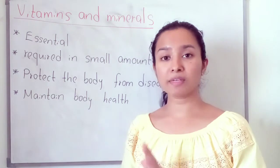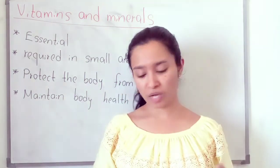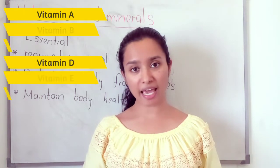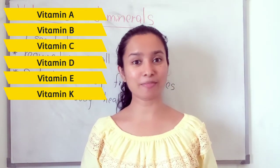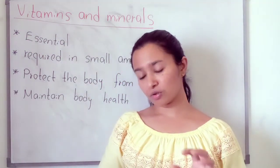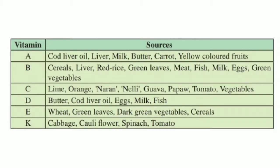There are different kinds of vitamins, but you need to know six types: Vitamin A, B, C, D, E and K. Sources of Vitamin A include cod liver oil, liver, milk, butter, carrots and yellow-colored fruits. Vitamin B is found mostly in cereals, red rice, liver, green leaves, meat, fish, milk, egg and green vegetables.